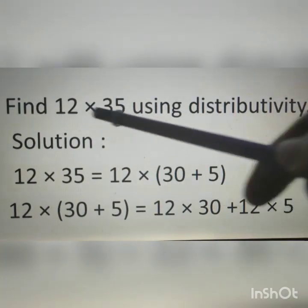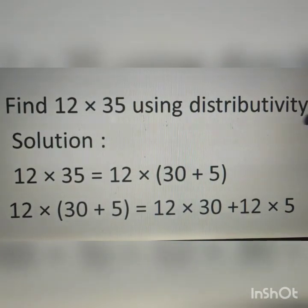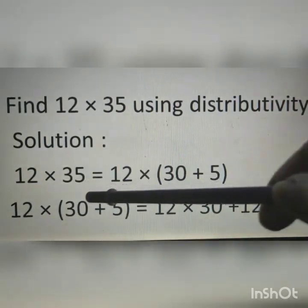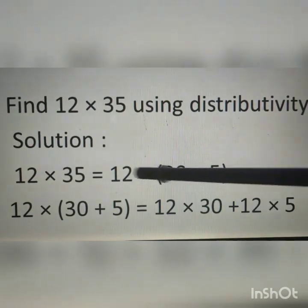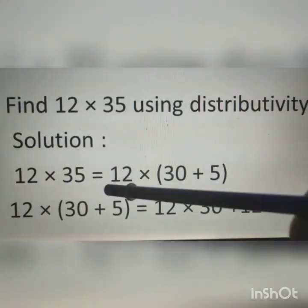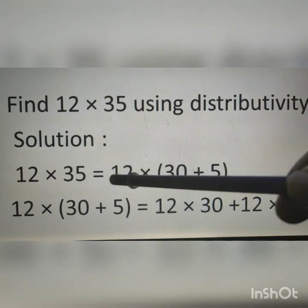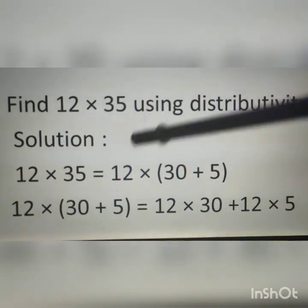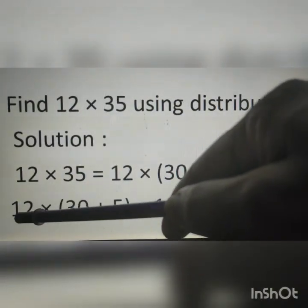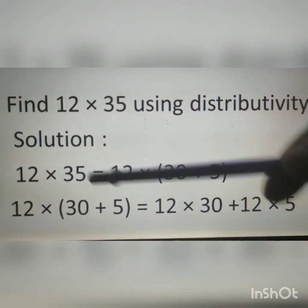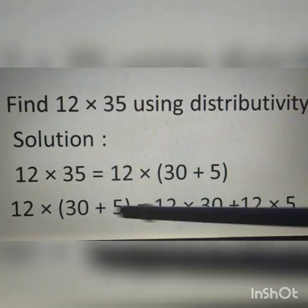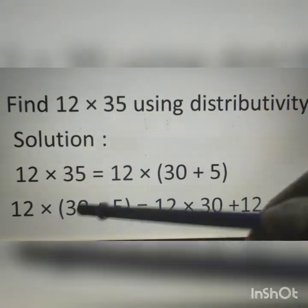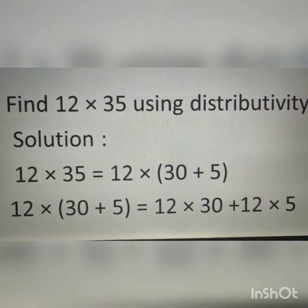Example: Find 12 × 35 using the distributive property. Solution: 12 × 35 = 12 × (30 + 5). According to the distributive property we can write 12 × 30 + 12 × 5. Here 12 is distributed among 30 and 5.